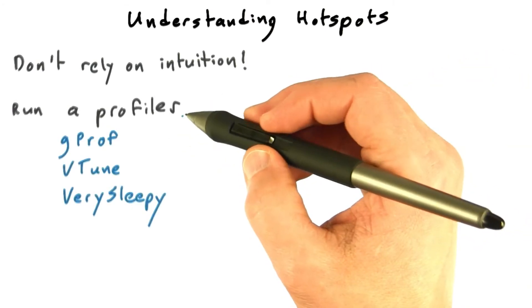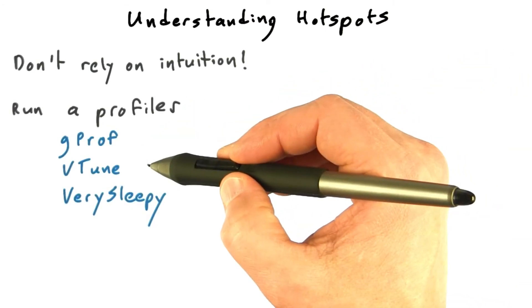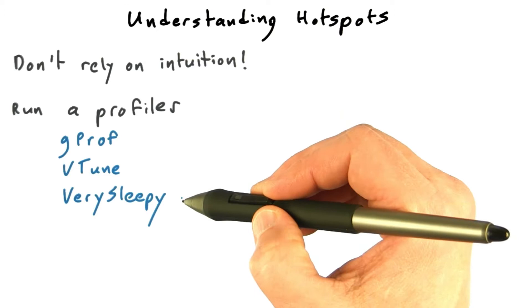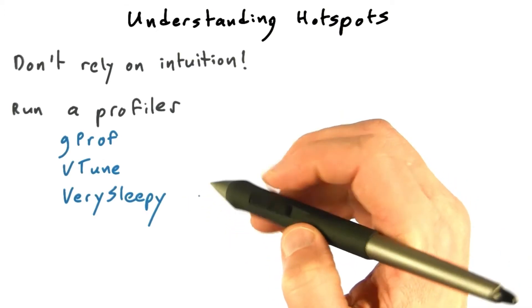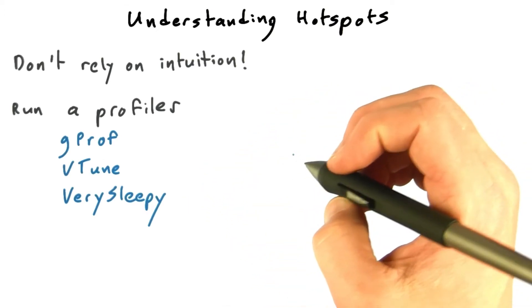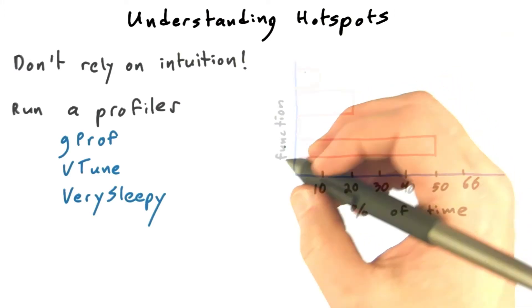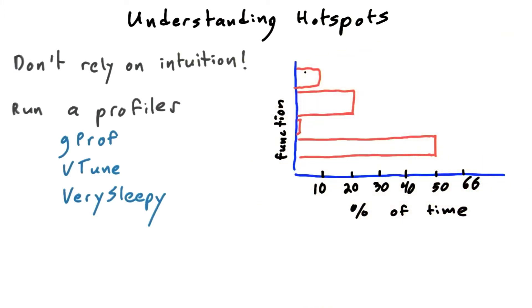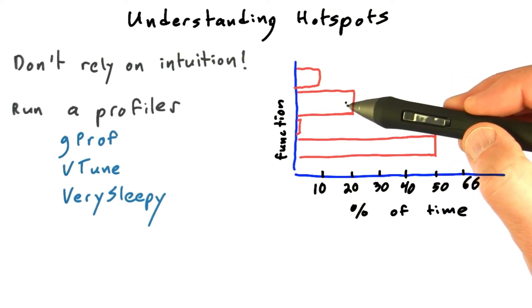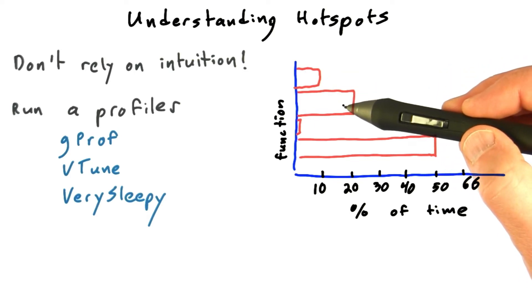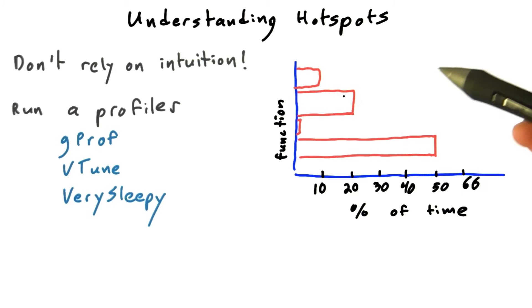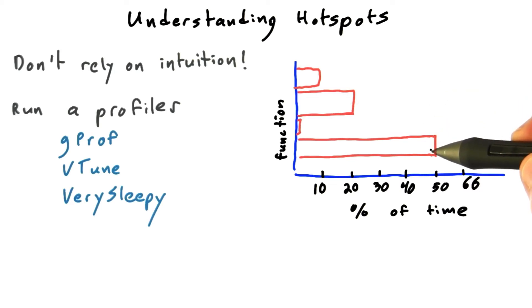Run your favorite profiler — whether that's gprof, VTune, or the brilliantly named VerySleepy profiler — and look at how much time the various functions or lines of code take. You'll get output showing how much time each function takes. Some function might take 10%, another might take 20% of the total time. In this case, the program is spending 50% of its time in this one function, so there's a clear hotspot here.